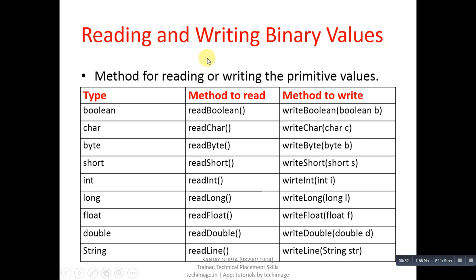Now coming on to the topic: reading and writing binary values. There are various data types available in Java. For reading or writing these data type values, you can use the following methods listed here. For reading, you can use readBoolean, readChar, readByte, readShort, readInt, readLong, readFloat, readDouble, and readLine. Similar to reading, there are write methods. While reading, they return the specific type of value you want to read.